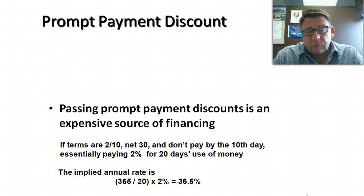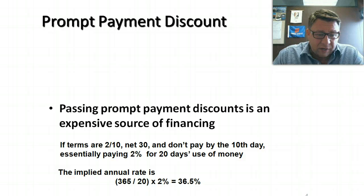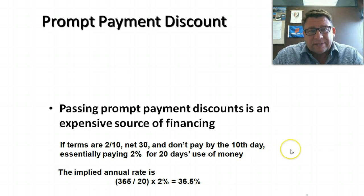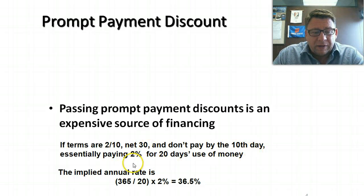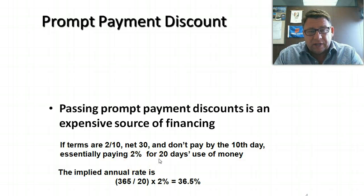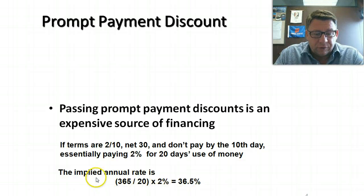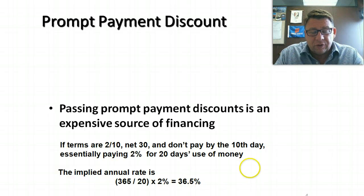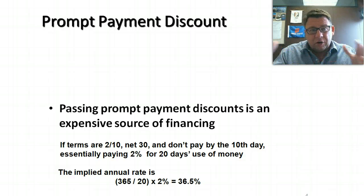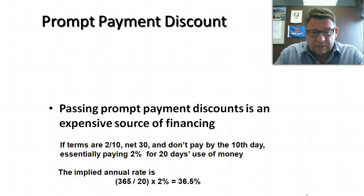Most companies, when offered a discount, should take it. In fact, some may even borrow money from a bank to take it if they don't have enough cash. The reason is that if you pass on the discount, it is actually a very expensive form of financing. With 2/10 net 30, if we don't pay within 10 days, we are basically paying 2% interest for the next 20 days' use of that money. If we figure out what that 2% for 20 days is on an annual basis, that works out to be about 36.5%. If we can go to the bank and borrow money at 5%, we'd be much better off doing that and taking the discount versus having the vendor finance it at nearly 37%.